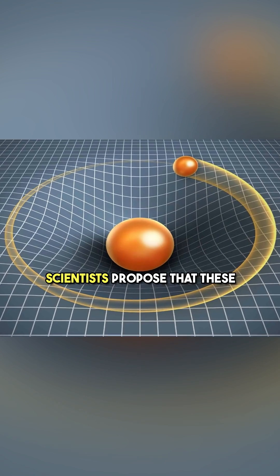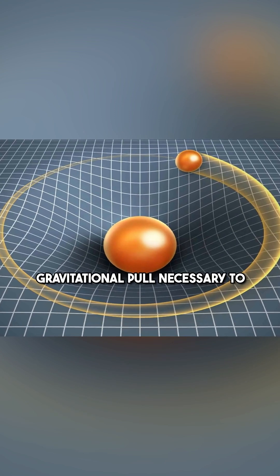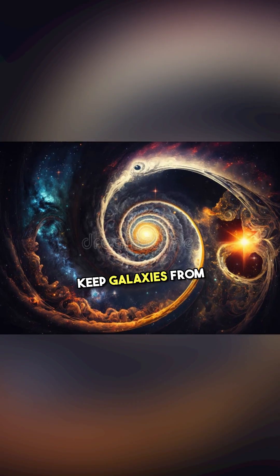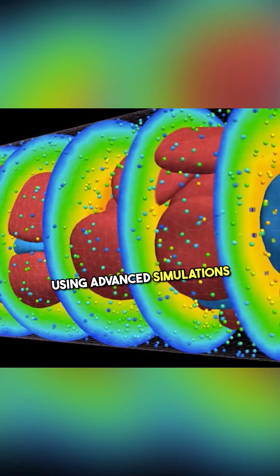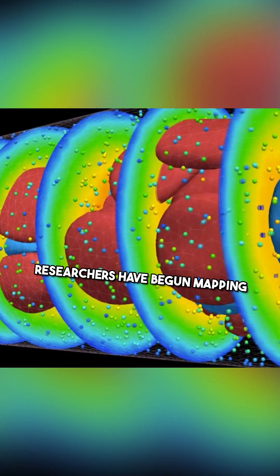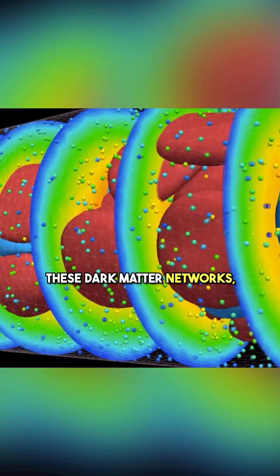Scientists propose that these bridges help maintain the gravitational pull necessary to keep galaxies from drifting apart. Using advanced simulations and observational data, researchers have begun mapping these dark matter networks.